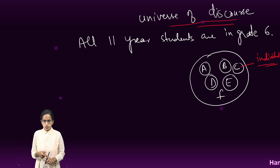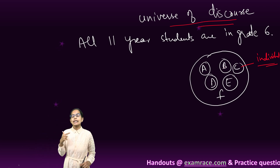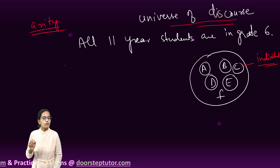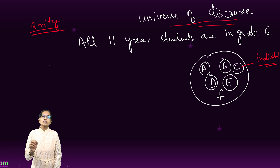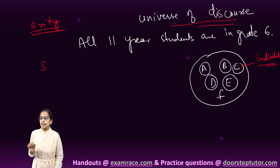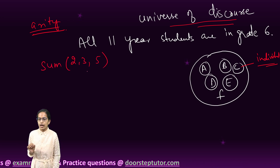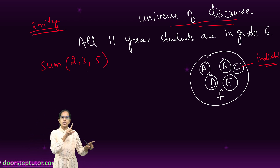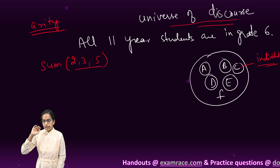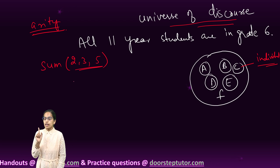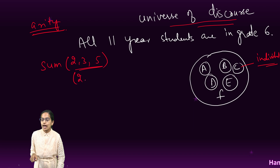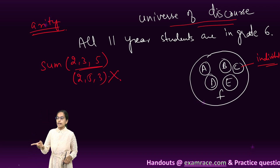An important concept in predicate calculus is arity — the number of elements. For example, 'Ram is mortal' has one element (Ram), so the arity is one. For 'sum of 2 and 3 is 5,' written as Sum(2, 3, 5), the arity is 3. The key point is that order matters: Sum(2,3,5) means 2+3=5; you cannot rewrite it as 2,5,3 — that would be meaningless.